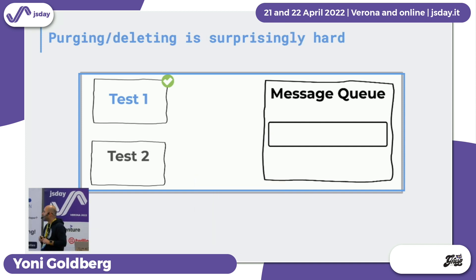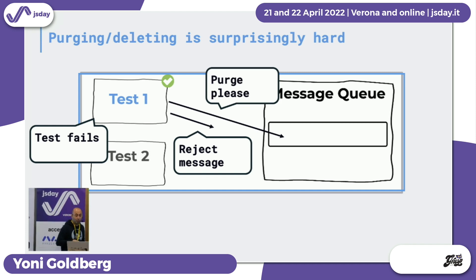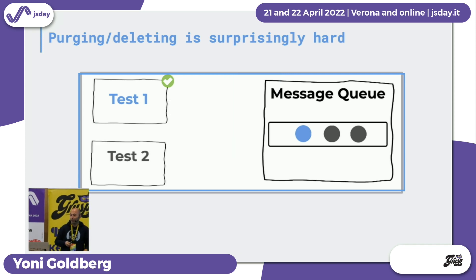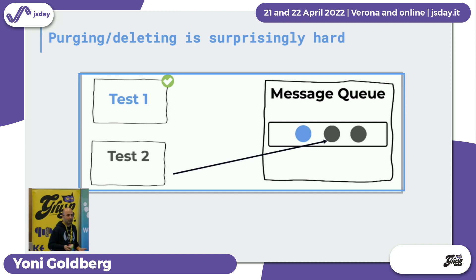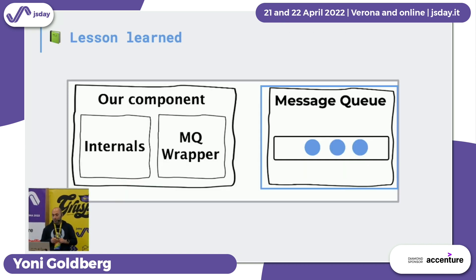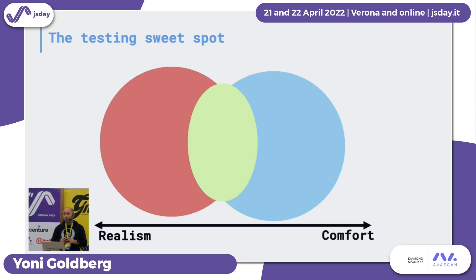Even this was surprisingly really hard. Test one fails, so all the messages it handled are rejected and get back to the queue. After the test, we ask to purge the queue — but surprisingly, the purge request happens before the messages get back to the queue. So after test one ends, there are still messages in the queue, and when test two starts, it unexpectedly consumes them. For this reason, AWS SQS states in their documentation that if you try to purge the queue, they need 60 seconds to clean it up. So waiting 60 seconds per test doesn't sound right. The lesson learned is that the message queue layer could be a flaky monster — it's not as easy to separate data between tests as with a database.